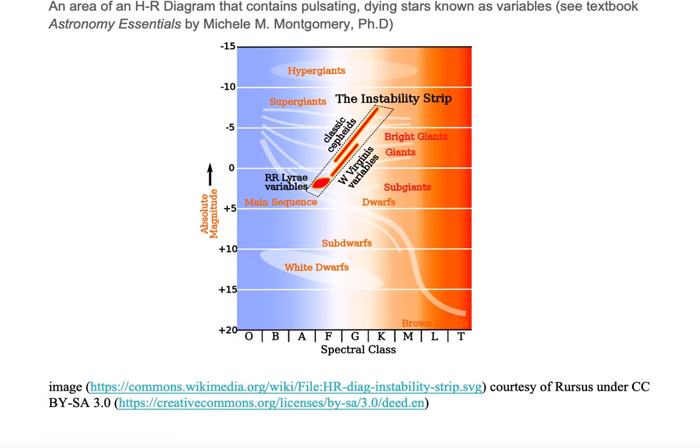On this HR diagram, we have absolute magnitude on the vertical axis increasing upwards, and spectral class on the horizontal axis. Each spectral class is based on the surface temperature of the object, and surface temperature increases to the left.